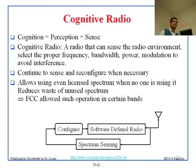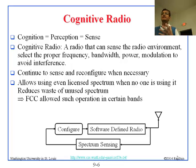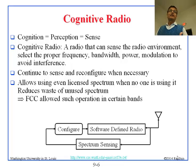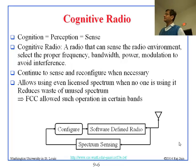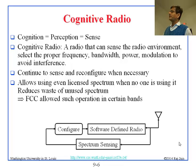The next concept is cognitive radio. Cognitive means smart — it means something that can recognize and sense. It is more than just software-defined. Software-defined can follow your orders but cannot really think, whereas cognitive radio can think and sense. Cognitive means perceive or sense. So cognitive radio is the one that can sense the radio environment, select the proper frequency, bandwidth, power, and modulation, and avoid interference. It is basically a smart radio.